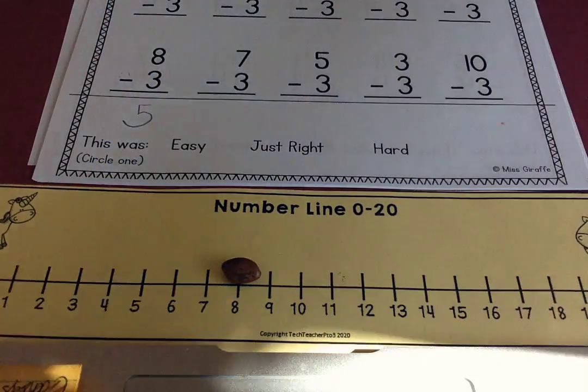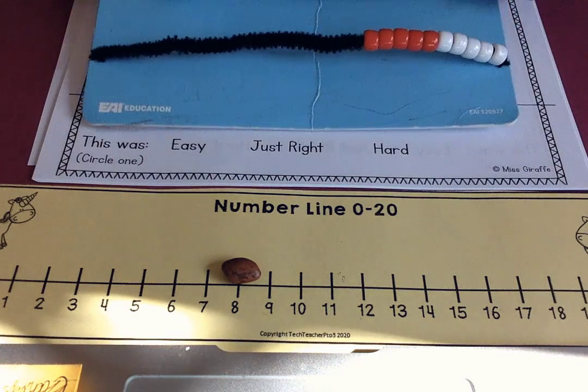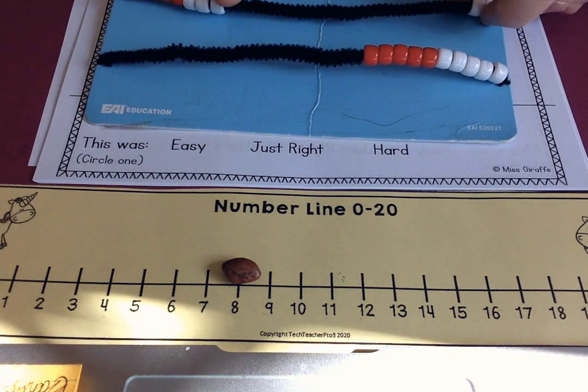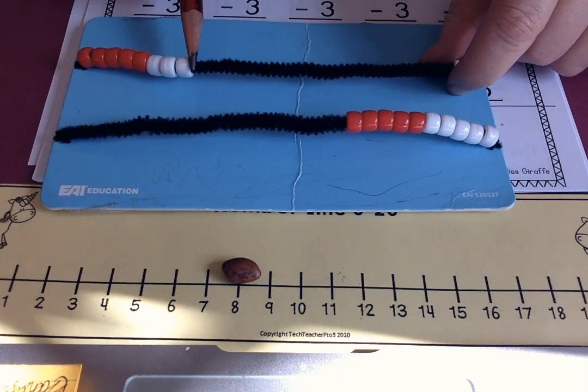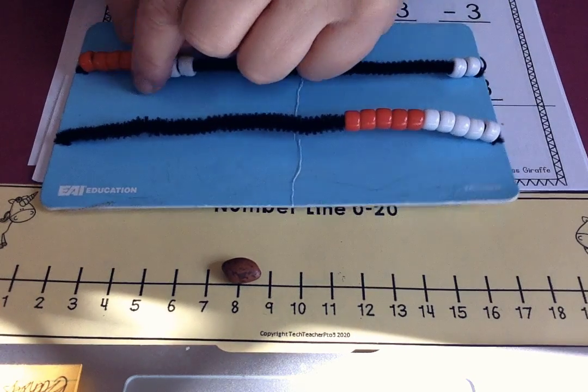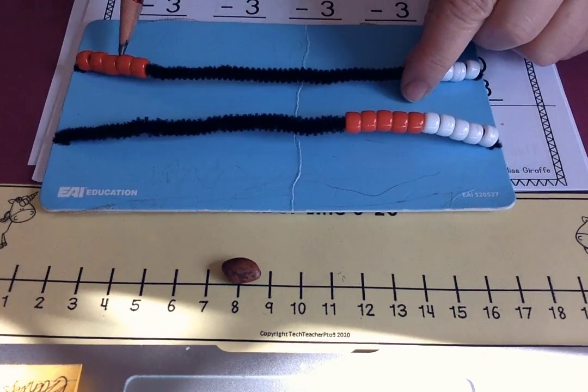You could also do it with your math rack. You start with—let's see, I'm trying to make sure you can see this—you start with eight and then you take away three and that leaves five.